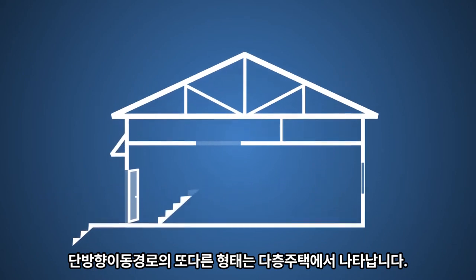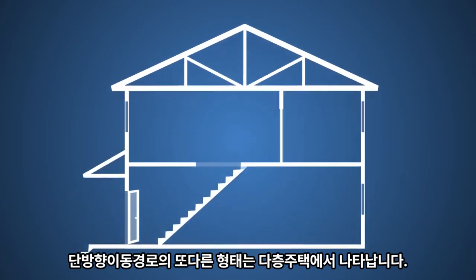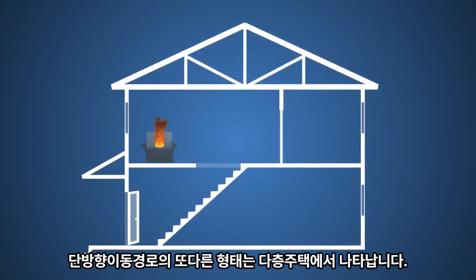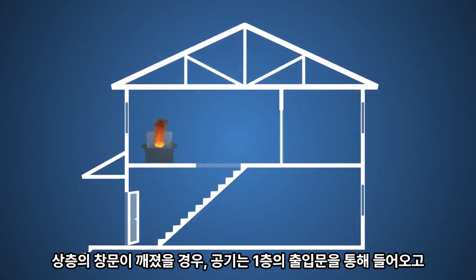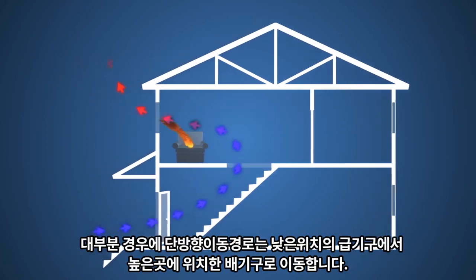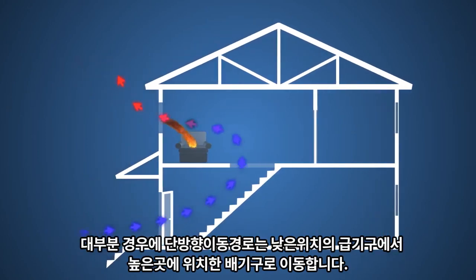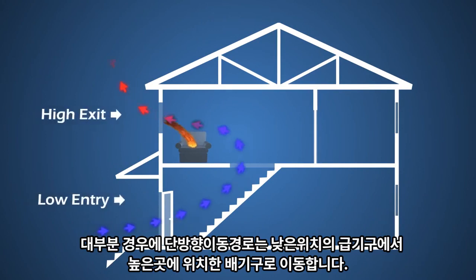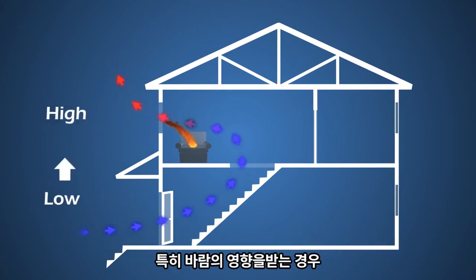Another form of unidirectional flow path is in a multi-story dwelling. Suppose an upper floor window breaks — a unidirectional flow path will occur when air enters the first floor door opening and exits the upper floor window. In almost all cases, unidirectional flow paths will establish with a low entry and high exit, or low to high.